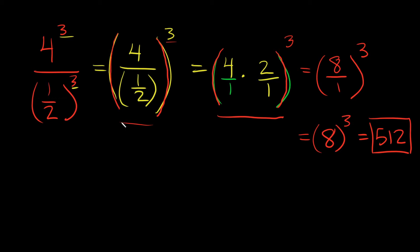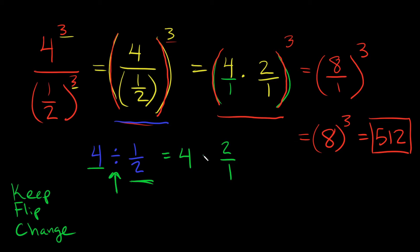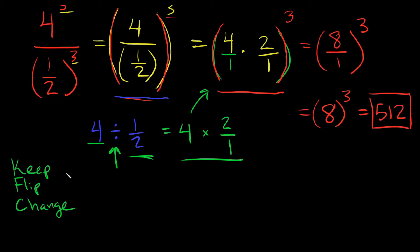In case dividing by a fraction is still throwing you off, remember KFC: Keep, Flip, Change. Keep the first number, flip the second fraction, and change the sign from division to multiplication. So 4 divided by one-half: keep 4, flip one-half to two over one, and multiply. That's the same thing we just did up there.